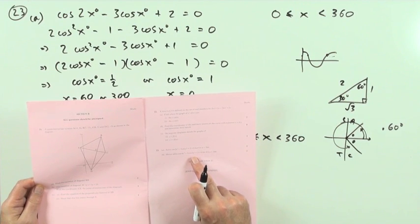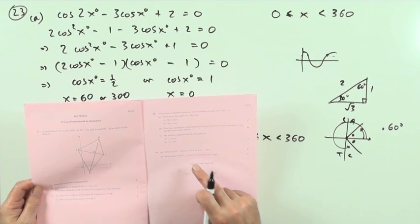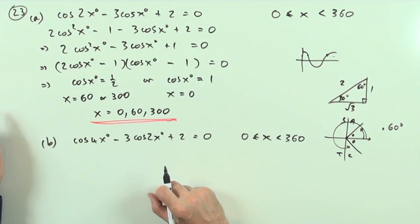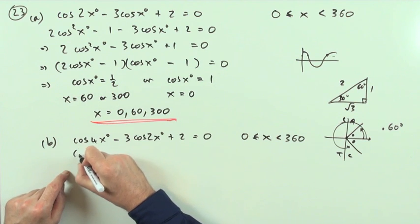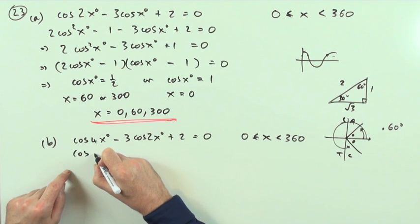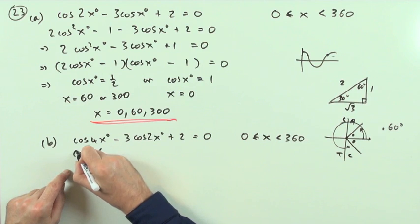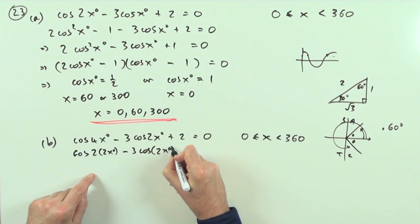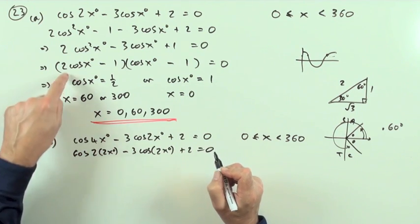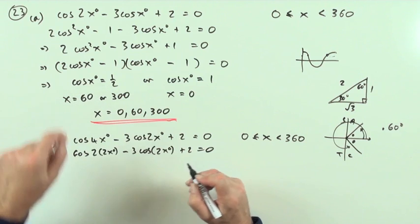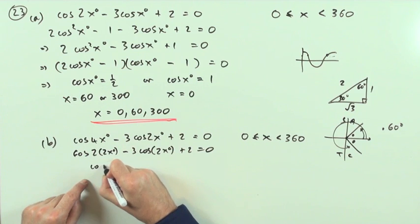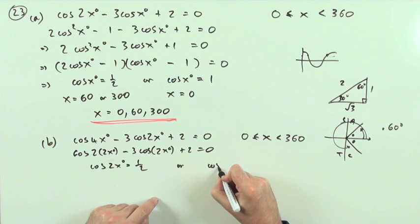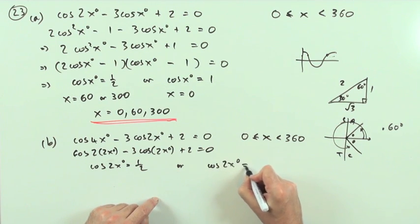Hence solve this equation: cos 4x minus 3cos 2x plus 2 equals 0, which is just the same as the first one only with the x's replaced with 2x. You could say that's the same as cos of 2 times 2x degrees minus 3cos 2x degrees plus 2, which would involve getting the same quadratic and the same answers, which would give you cos 2x equals a half or cos 2x equals 1.